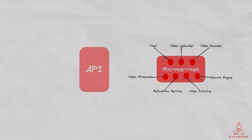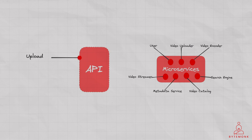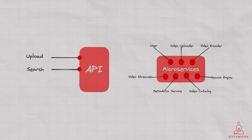We will also have a Video Service API which is responsible for managing all video-related operations in the video platform. It provides a RESTful API that allows applications to interact with the video platform, with the following endpoints. An upload endpoint which allows users to upload videos to the platform — the API receives the video file, performs validation and transcoding, and stores the video in a storage service like S3. Upon successful upload, the API generates metadata for the video and stores it in the Video Catalog microservice. The search endpoint allows users to perform searches for videos on the platform. The API receives search criteria from the client application, sends the request to the search engine microservice, retrieves video metadata from the Video Catalog microservice, and sends the search results back to the client application.